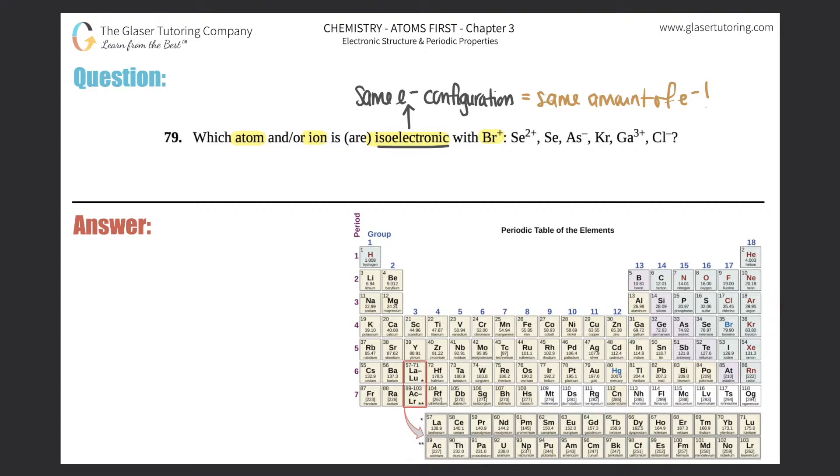Iso—we've seen this before when talking about isotopes. Iso means same in chemistry. In this case they're talking about electrons, so there it is, it's right in the word: same amount of electrons.